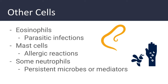Mast cells participate in both acute and chronic inflammatory reactions by releasing histamine and prostaglandins. They are most often seen in response to type 1 immediate hypersensitivity reactions — more commonly referred to as allergic reactions — typically in response to food, insect venom, or drugs. Even though these reactions are often immediate and acute, mast cells are also present in chronic inflammation and, because they secrete cytokines, they can continue to stimulate chronic inflammation.